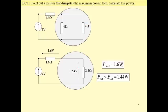So power dissipated by 1.6 ohm resistance, this resistance is 1.6 watt, and power dissipated by this resistance is 1.44 watt, which means that this resistance is the resistance that dissipates the maximum power.